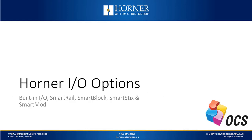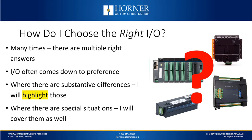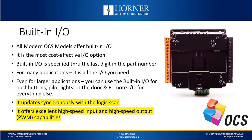Now that we've covered the different types of IO that are out there, let's talk about the solutions that Horner offers. How do I choose the right IO for the application? It often comes down to preference, but not always. The substantial differences between the specific IO solutions that we provide will be highlighted on screen. Sometimes there are special situations — for example, handling AC inputs — which will need a certain IO as well. Let's start with built-in IO. All modern OCS models offer built-in IO. It is the most cost-effective IO option we have. The built-in IO for Horner products is specified through the last digit of the part number, so you don't add it in the field.